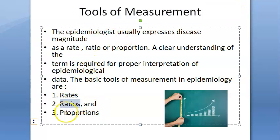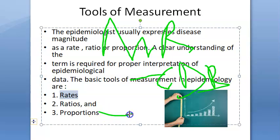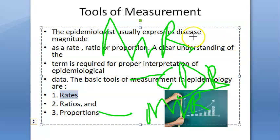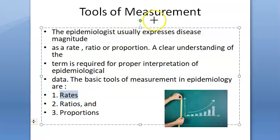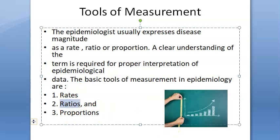The tools for measurement in epidemiology are rates, ratios, and proportions. Under mortality rate, you have crude death rate, infant mortality rate, maternal mortality rate, disease-specific mortality rate, and case fatality rate. You also have ratios such as maternal mortality ratio and odds ratio. A proportion is a ratio that indicates the relation in magnitude of a part to the whole.